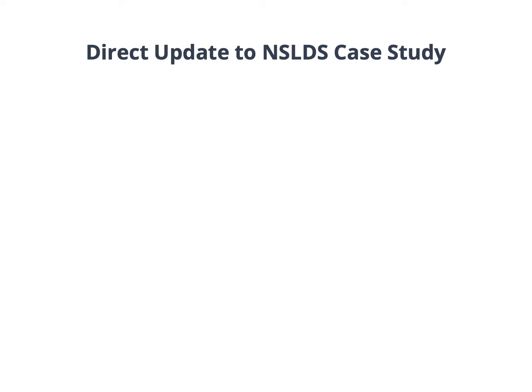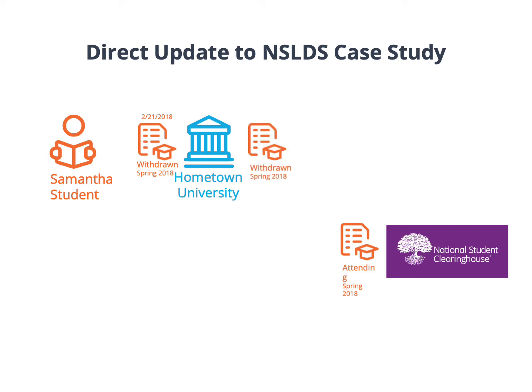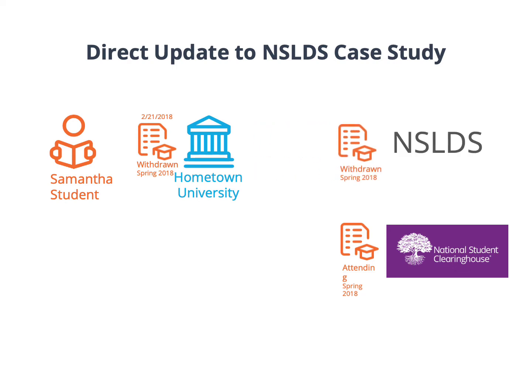Now we will go over a case study on this scenario. Samantha's student was attending Hometown University for spring 2018. Samantha ended up dropping all of her courses on February 21st, 2018. After Samantha dropped all of her courses, an employee at Hometown University updated NSLDS to report the withdrawn status for Samantha effective February 21st. However, the same withdrawn status was not reported to the clearinghouse. When the clearinghouse responded to the SSCR roster, the previously reported enrolled status for spring 2018 was reported. After reporting this to NSLDS, an Error 32 was returned.